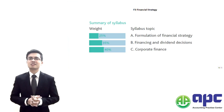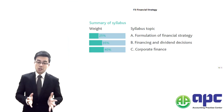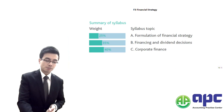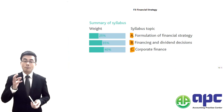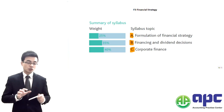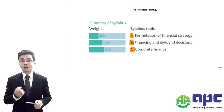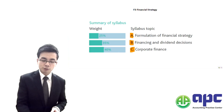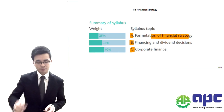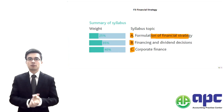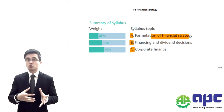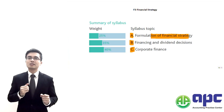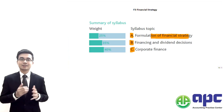Let's have a look at the syllabus. The syllabus for F3 will be divided into A, B and C sections. The financial strategy is essentially advanced financial management. Section A is talking about how we're going to formulate the financial strategy — managing the financial aspects of the company — and this is based upon the accounting equation.